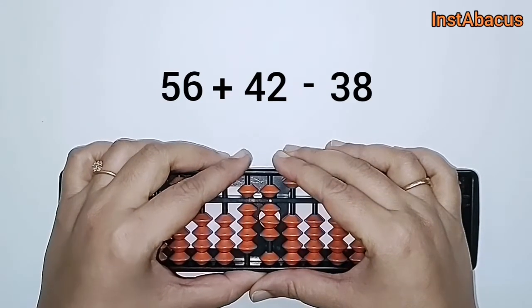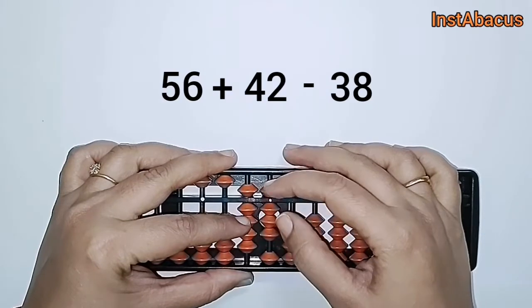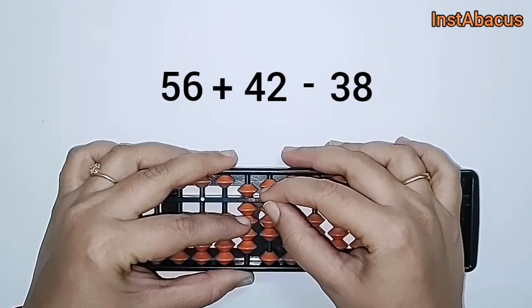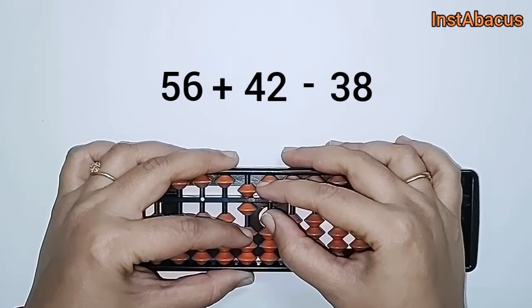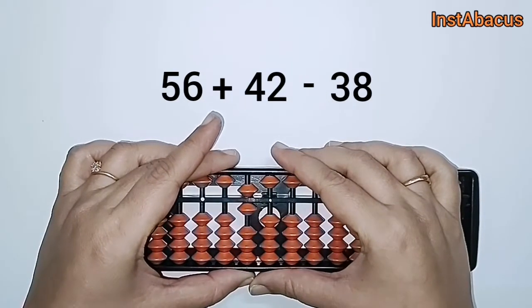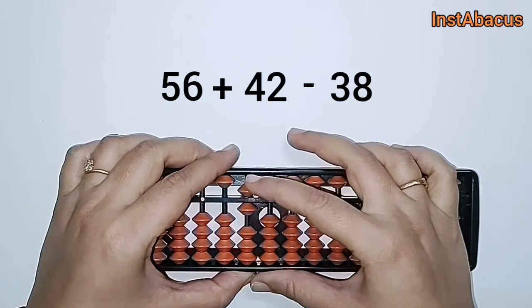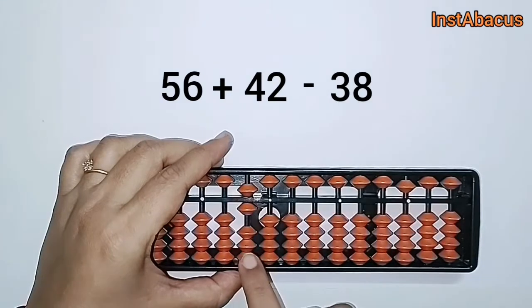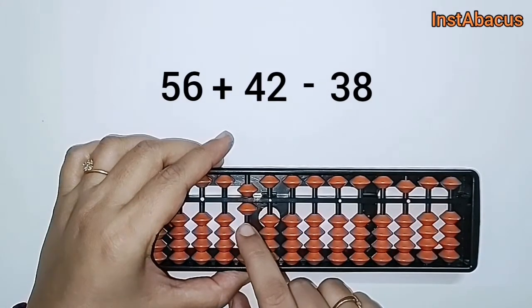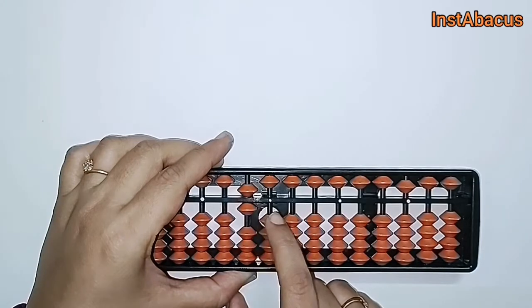Easy, isn't it? Now we are going to subtract 38 from this. So these three earthly beads along with these three earthly and this heavenly bead, all of them will move away. So what is our answer? We have one heavenly and one earthly in the tens rod. So this is 60. Your answer is 60. That's perfect.